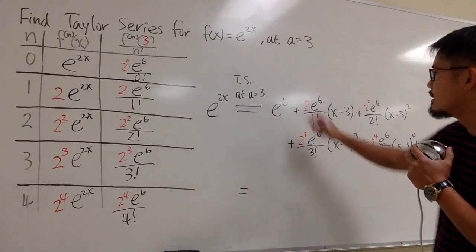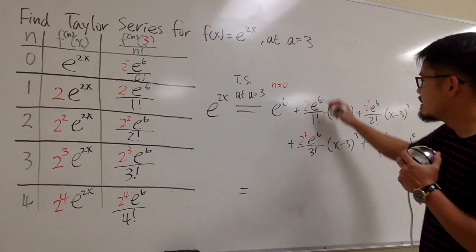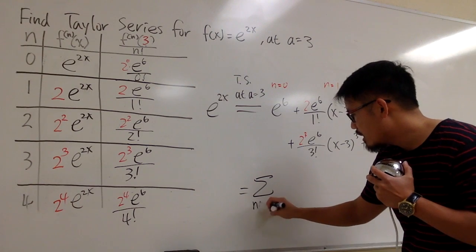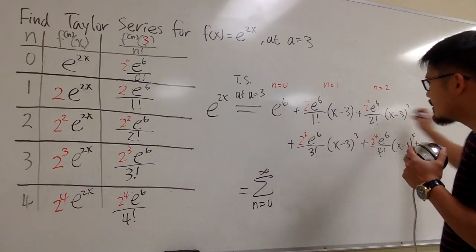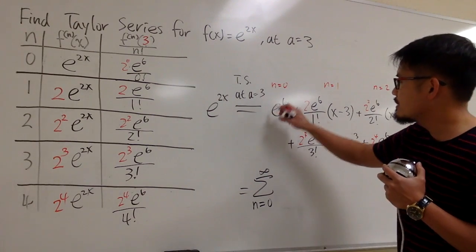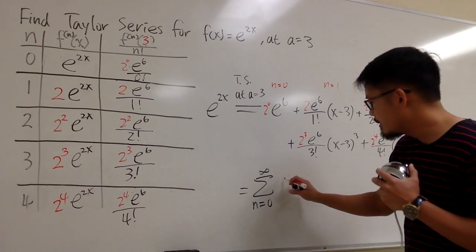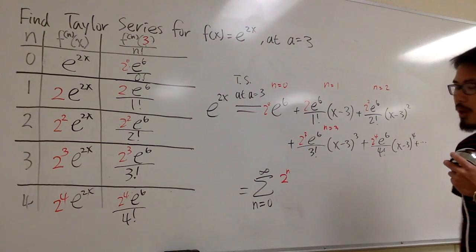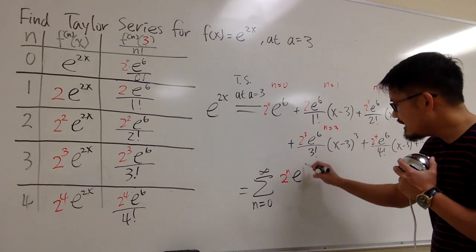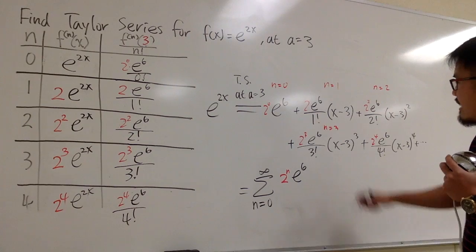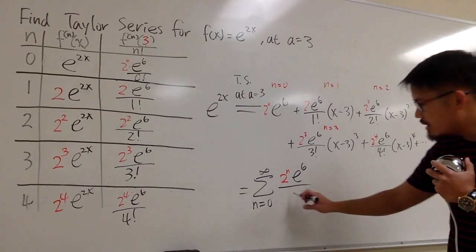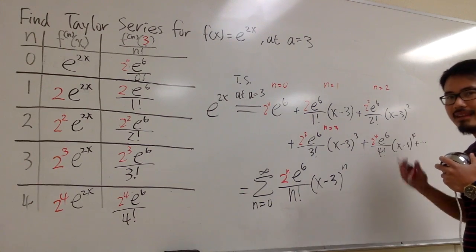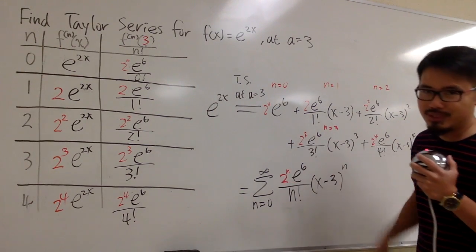We can also write this in a more compact sigma notation form. The sum runs from n equals 0 to infinity. Each term has 2 to the nth power — for n=3 you have 2 to the 3rd, for the first term it's 2 to the 0. So we write 2 to the nth power times e to the 6th, divided by n factorial, multiplied by (x minus 3) to the nth power. That's the sigma notation form of this series.